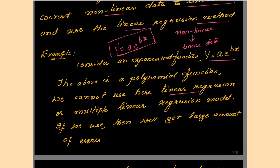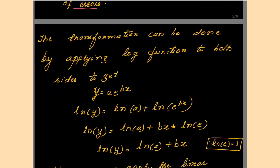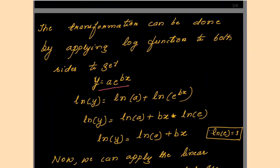For this function y = a × e^(b×x), you cannot use linear regression directly — it will give a large amount of errors. To solve this using transformation, take this equation and apply the logarithm on both sides. You can write ln(y) on the left. Using logarithmic properties — specifically that ln(a^b) = b·ln(a) — you can convert the right-hand terms accordingly.